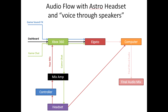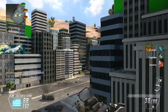The computer in this diagram basically represents the Elgato software — the recording software. The capture card is getting all of your audio from the Xbox, including what people are saying, and sending it straight to the computer. Your headset is also sending straight to the computer to the software program, and the software is going to mix all of this into one audio channel. Once it's mixed, you can't unbalance it — it's not recording different channels, different tracks, different lines. Once it's mixed, it's done, so it's important to get the balance right.